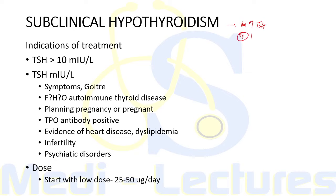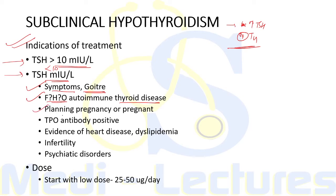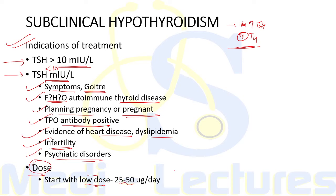Subclinical hypothyroidism is characterized by increased TSH levels with normal T4 and T3, usually without clinical features. Treatment is indicated if TSH is more than 10 mIU/L. If TSH is less than 10, treatment indications include symptomatic patient, goiter, family history of autoimmune thyroid disease, planning pregnancy or pregnant, TPO antibody positive, evidence of heart disease or dyslipidemia, infertility, or presence of psychiatric disorders. Dosage should start low at 25 to 50 microgram per day with gradual increase and regular TSH monitoring.